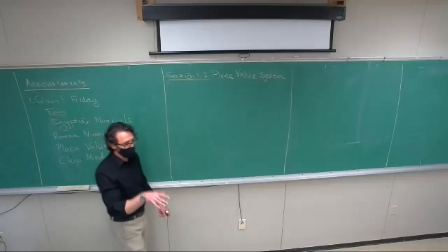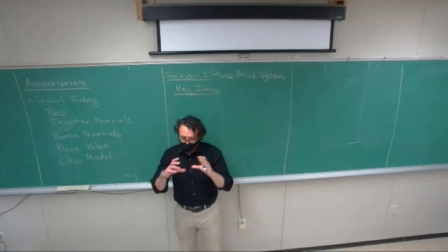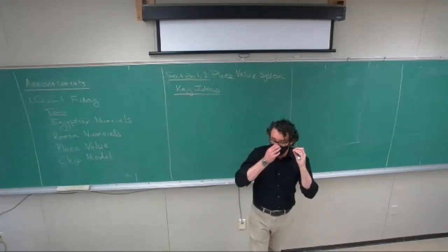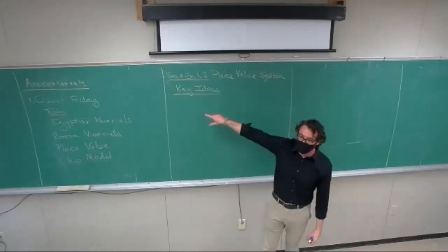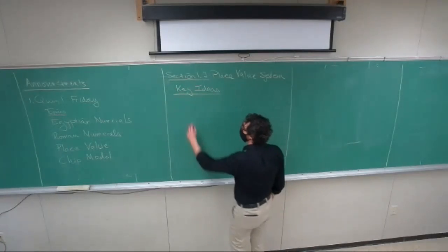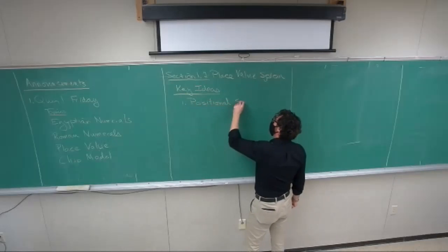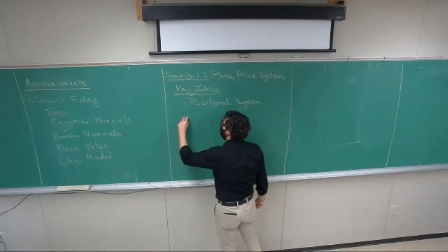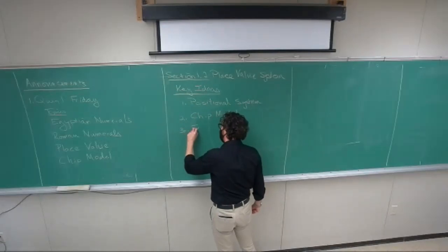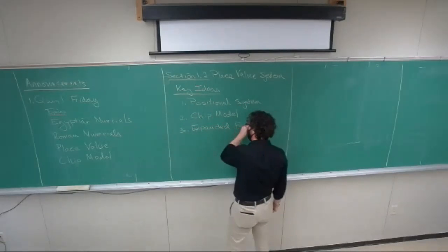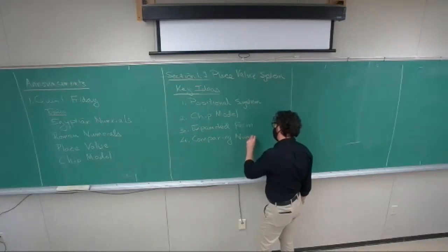Today we're going to talk about the place value system. With every class, try to narrow it down to two or three key ideas — these are the things that if your friend misses the class and they say, what did we talk about on Wednesday, you should tell them these things. They need to know the positional system, the chip model, expanded form, and comparing numbers.